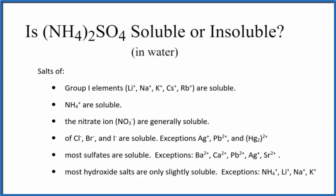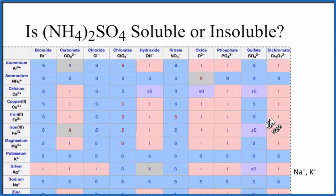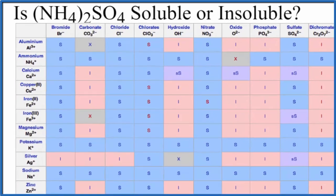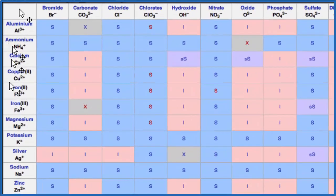We could also take a look at a solubility chart. So here is a solubility chart and the positive ions, they are on the left here. We have ammonium right here, NH4+, and then we look for the sulfate ion across the top, SO4^2-, that's right there.